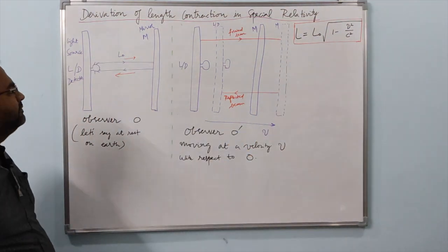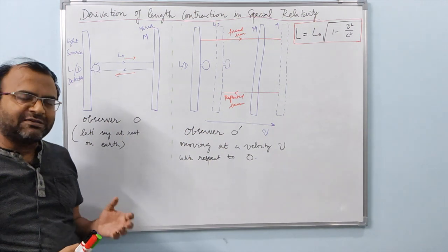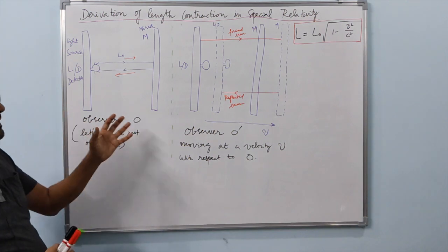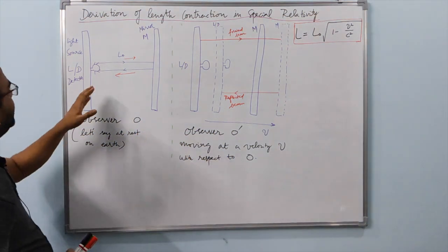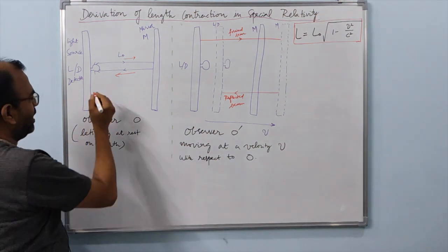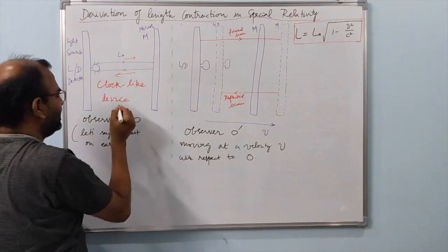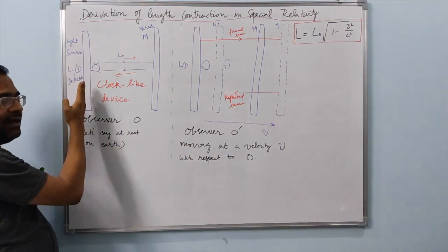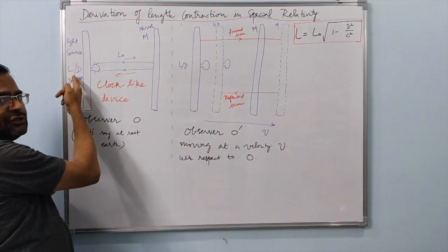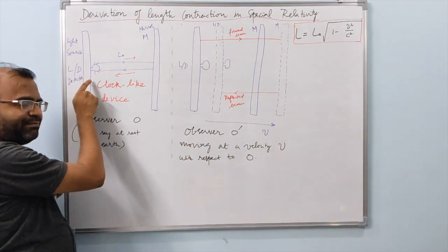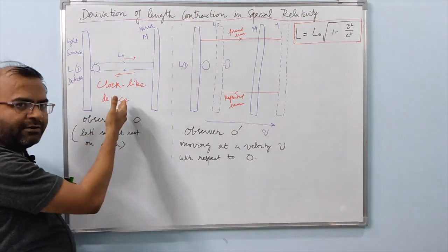The derivation follows the same procedure we employed for deriving the expression for time dilation in special relativity, so the setup is somewhat similar and the arguments are quite close. The device used here is like a clock — a clock-like device. It has a light source and detector on one side, and a mirror M which reflects the light beam back to the light source. Once the detector detects the reflected beam, it emits the next flash — so this is basically a flashing device which works like a ticking clock.